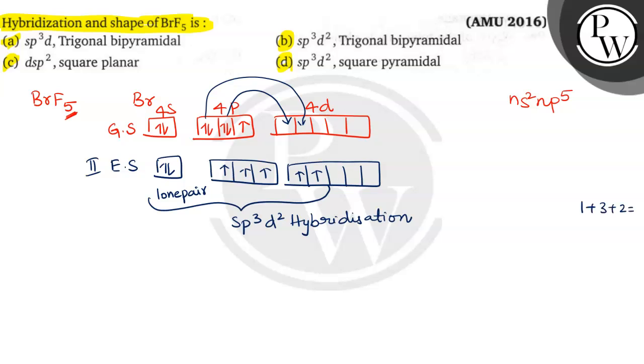SP3D2 means totally how many orbitals are forming? Six orbitals are forming. These six orbitals, how they are arranged? These six orbitals, they are arranged in an octahedral manner.